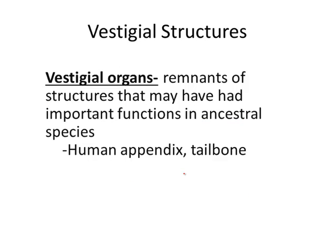Another important thing about structures is vestigial organs — basically leftovers or remnants of structures that once had important functions in our ancestors. For example, our tailbone: we don't have a tail anymore, but our ancestors did, so it's left over. Or our appendix — it does nothing for us and usually has to be removed when infected, but in our ancestral species it was important for digesting the food they ate.